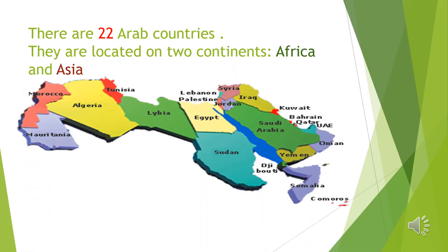There are 22 Arab countries in all, and they are located on two continents — in Africa and Asia. You won't find Arab countries in the continent of Europe or the continent of South America. Arab countries are just present in Asia and Africa.